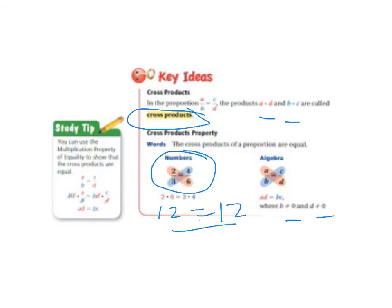So if you aren't sure you can just cross multiply and if your two cross products are equal then it's a proportional relationship. So here's your study tip over here.